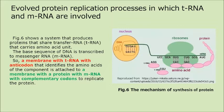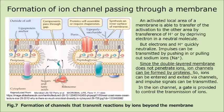The base sequence of DNA is transcribed to messenger RNA. So, a membrane with transfer RNA with anticodon that identifies the amino acids of the component is attached to a membrane with a protein with messenger RNA with complementary codons to replicate the protein. An activated local area of a membrane is able to transfer activation to another area by transference of hydrogen ion or by depriving electrons in a neutral molecule.